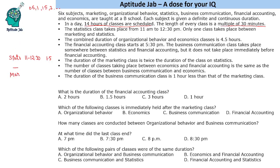Let's start with the assumption that marketing is held later, after statistics. The duration of the marketing class is twice the duration of statistics. Since statistics is 1.5 hours, marketing is three hours. Also, the duration of the business communication class is one hour less than marketing, so business communication is two hours.